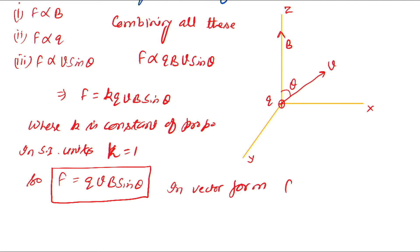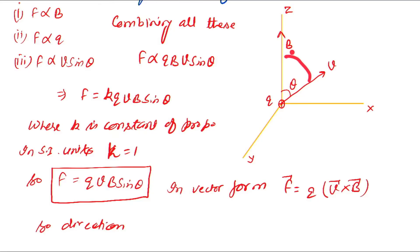In vector form, f = q(v × B). The direction of this force can be found using the right-hand curl rule. If we curl the fingers from velocity to magnetic field, then the direction of this force is perpendicular to both the x-axis and z-axis, that is along the y-axis. Making the cross product from v to B, the direction of this force will be along the y direction.